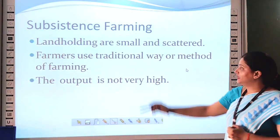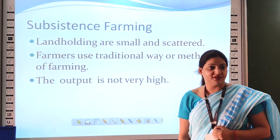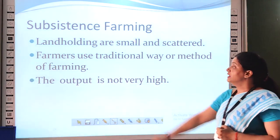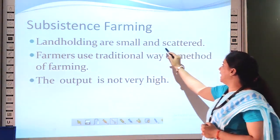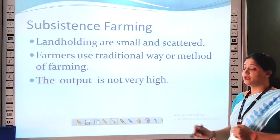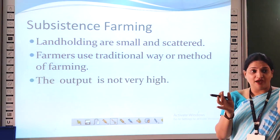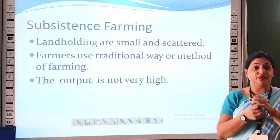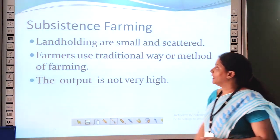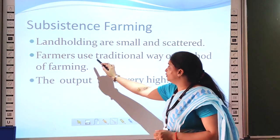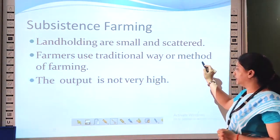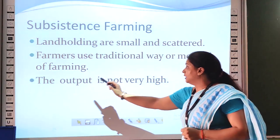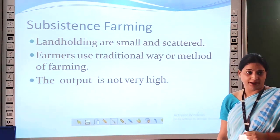These are the features of subsistence farming. The first one is that land holdings are small and scattered, meaning farmers have very small land areas that are very scattered. Farmers use traditional ways or methods of farming. The output is not very high.